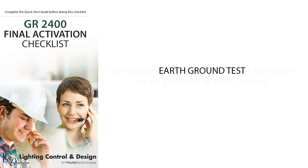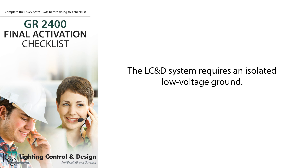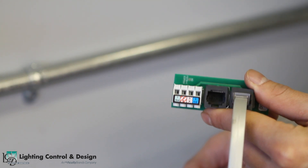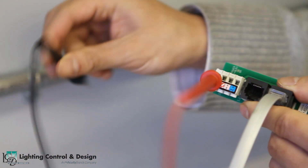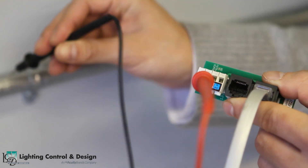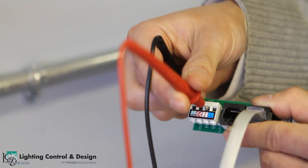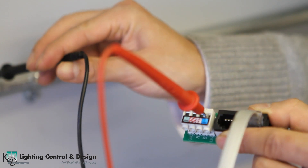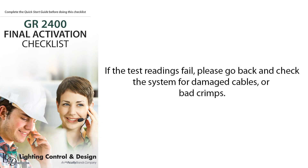The third test will be the earth ground test. The purpose of this test is to ensure that there are no pathways to earth ground. The LCND system requires an isolated low voltage ground. We can use the back plate on any panel, or any metal conduit that is grounded for this test. Measure resistance across the ground terminal to earth ground, from the A terminal to earth ground, from the B terminal to earth ground, and from the plus 12 terminal to earth ground. We should be expecting a reading of infinite or open on all of them. If the test readings fail, please go back and check the system for damaged cables or bad crimps.